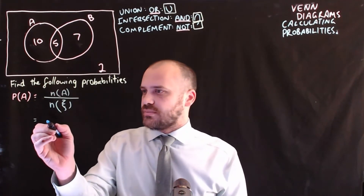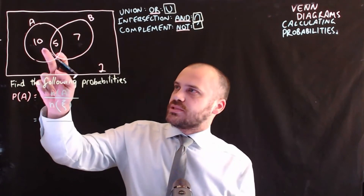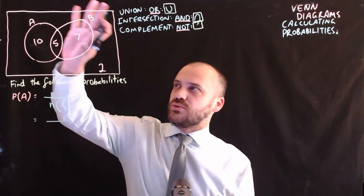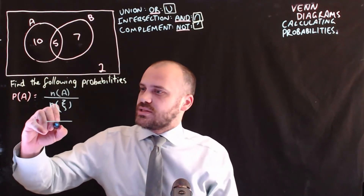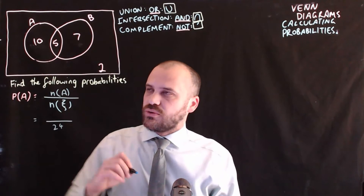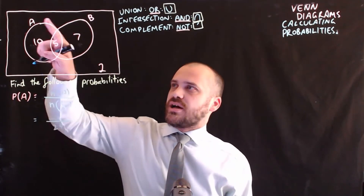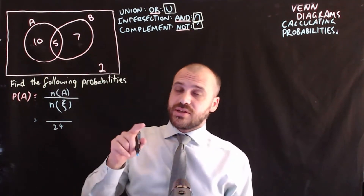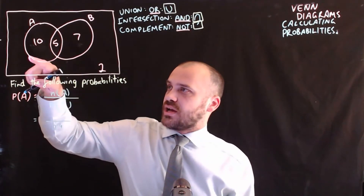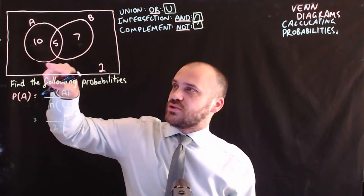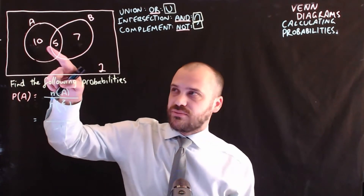The size of the universal set — we just add up all the numbers: 10 plus 5 plus 7 plus 2. That's all of the elements we're thinking of, so in this case it's 24. Now, a lot of people will look at this and think the number is 10, but it's not. The size of set A is anything in the circle that is set A, so that's 10 plus 5, which is 15.